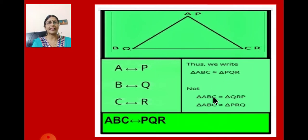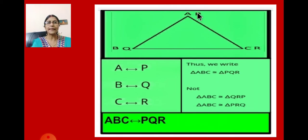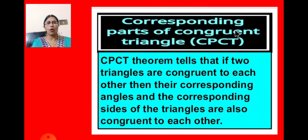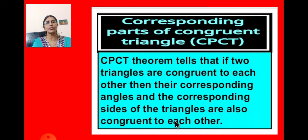We cannot write triangle ABC as congruent to triangle PRQ, because then the vertices will change and even the sides will change. We must write triangle ABC is congruent to triangle PQR. This is because of CPCT. CPCT stands for corresponding parts of congruent triangles. The CPCT theorem tells us that if two triangles are congruent to each other, then their corresponding angles and corresponding sides are also congruent to each other.